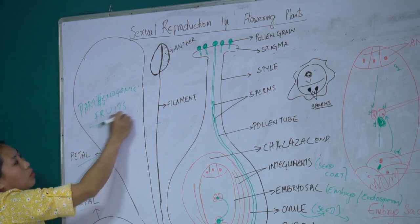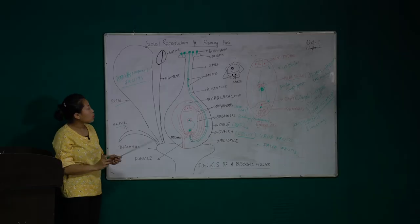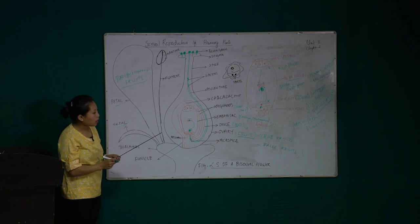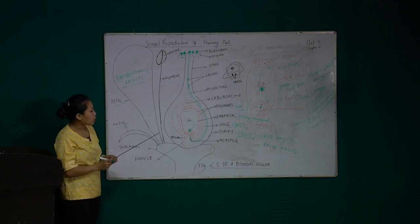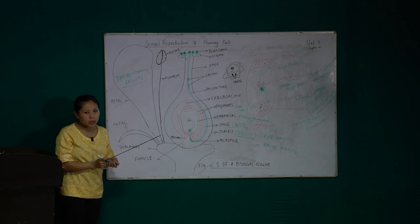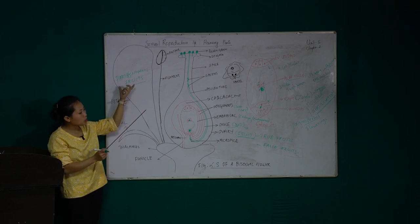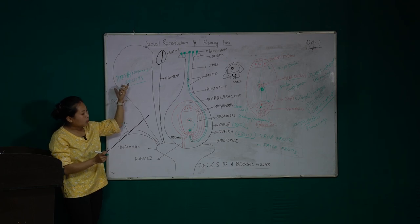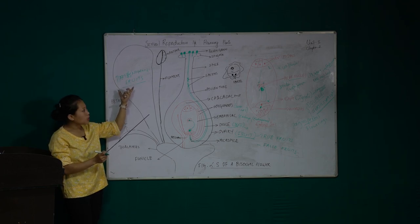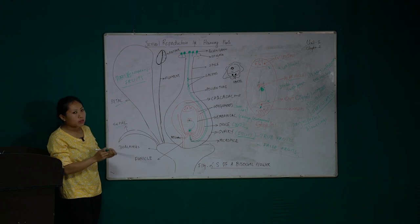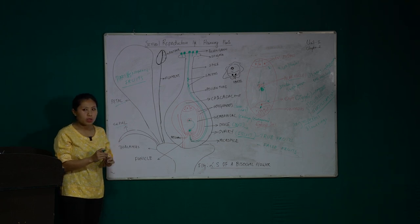Parthenocarpic fruits are those which develop without fertilization of the egg or the polar nuclei. For example, banana and grapes are examples of parthenocarpic fruits. In these fruits, fertilization — the fusion of the egg and the sperm — does not take place, and they are called parthenocarpic fruits. The phenomenon is known as parthenogenesis.